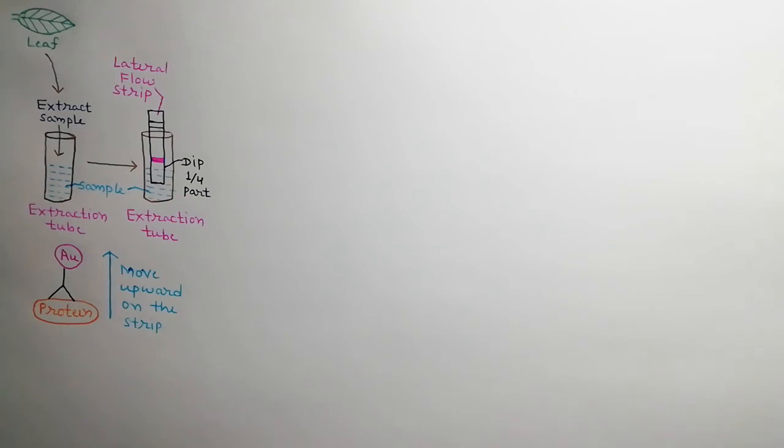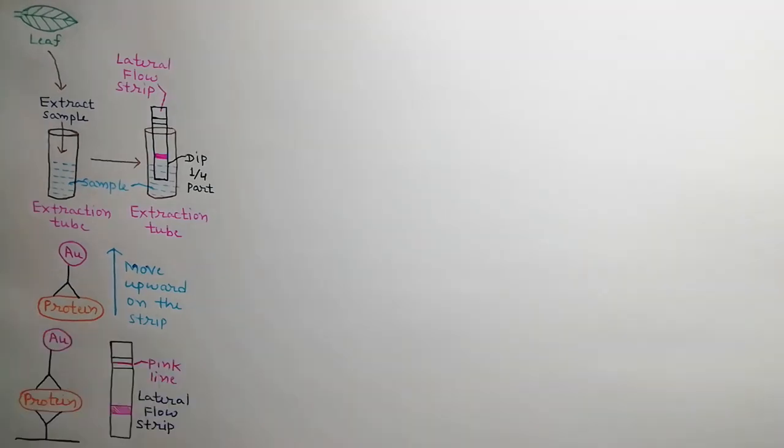If desired protein is present in the sample, it binds with gold-labeled antibodies and both travel upward on the strip as shown in the diagram. On upper region of strip, this protein binds with normal antibodies and makes antibody-antigen-antibody complex. As a result, a pink line appears on colorless part which represents the presence of desired protein as shown in the diagram.